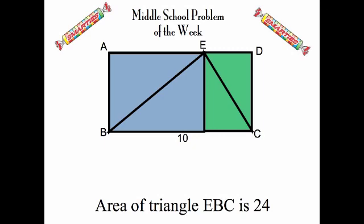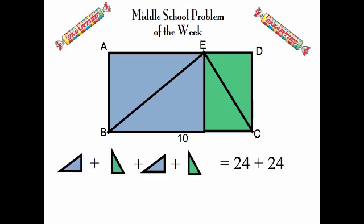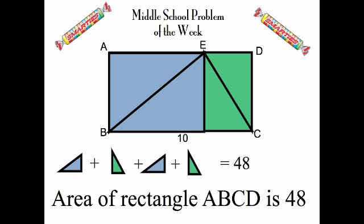Since one blue and one green triangle equals the inner triangle which we already know is 24 square units, then all four pieces must equal double that — 24 plus 24, or 48 square units — which is the area of the entire rectangle and the answer to this week's problem of the week.